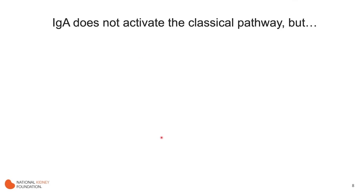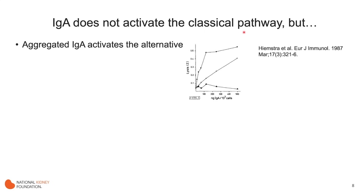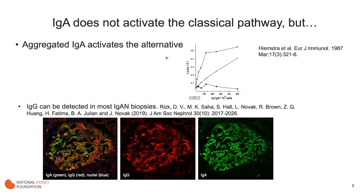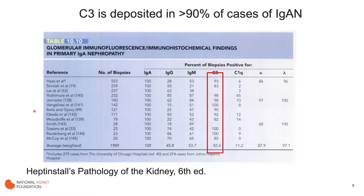One conundrum about IgA nephropathy is that IgA itself does not activate the classical pathway, distinguishing it from other immune complex diseases. The question has been how complement gets activated in this disease. One explanation is that aggregated IgA can directly activate the alternative pathway, so you may not need classical pathway activation. The other observation is that many if not most patients also have IgG deposits in the glomerulus, which could activate the classical pathway through traditional mechanisms.